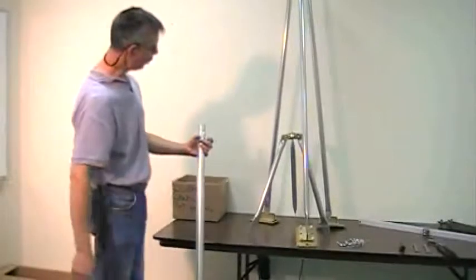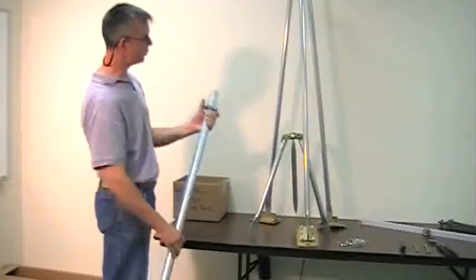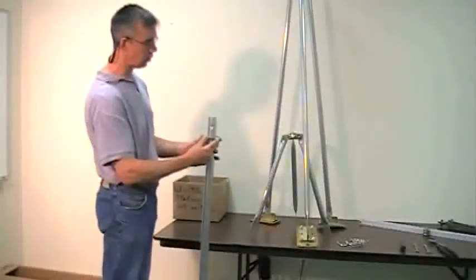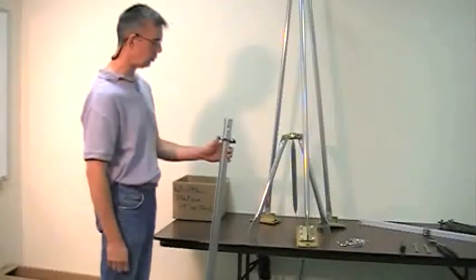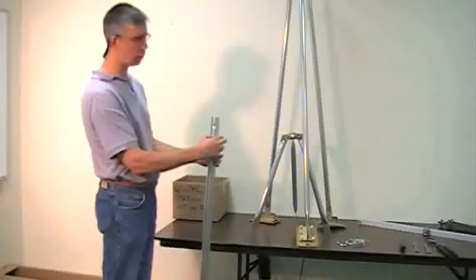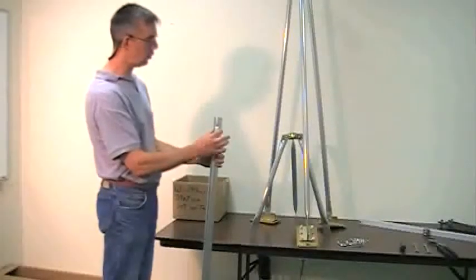This is the lower mast. There's not a whole lot to this. It's simply a 1 and 5 eighths U-bolt that I've stuck onto there just so once again that I don't lose it. This is what's actually going to secure the upper mast to the lower mast.